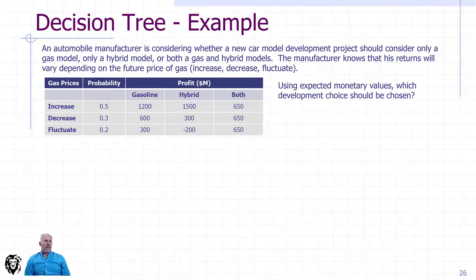We're going to do one more example of a decision tree. We're going to look at a hypothetical automobile manufacturer who is considering which new car models to develop. They've come up with three options: develop a gasoline car model, develop a hybrid car model, or do both. Depending on whether they perceive gasoline prices increasing, decreasing, or fluctuating will change the profitability of those various options. They've built this table which gives the probability of each occurrence - gasoline price going up 50%, decreasing 30%, or fluctuating 20% - and what they estimate their profitability would be in millions of dollars.